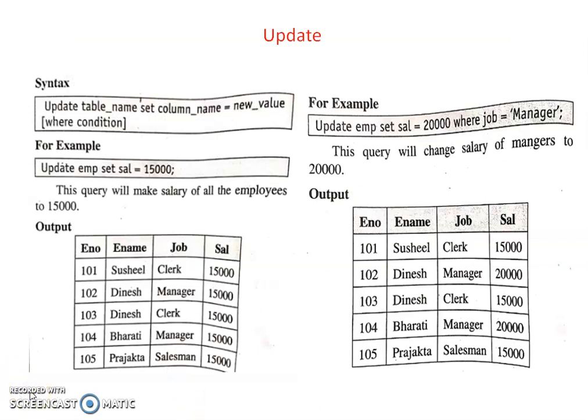Now we discuss the update query. Sometimes changes to the database become necessary; to make changes in the database, the UPDATE command is used. Update can be done in a single or multiple columns based on a given condition. The update command consists of a SET clause and an optional WHERE clause. The syntax is: UPDATE table_name SET column_name = new_value WHERE condition. For example, UPDATE employee SET salary = 15000. This query will make the salary of all employees 15,000.